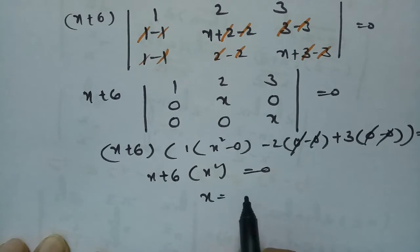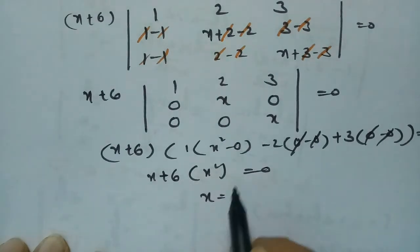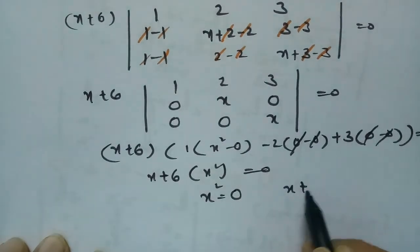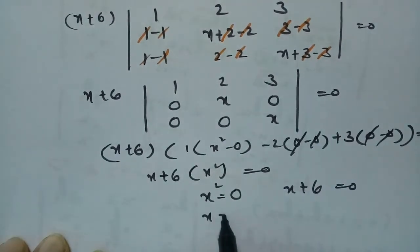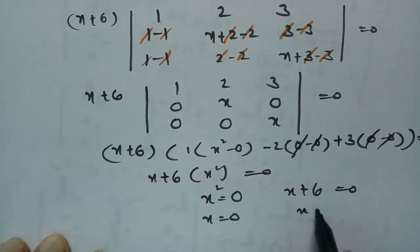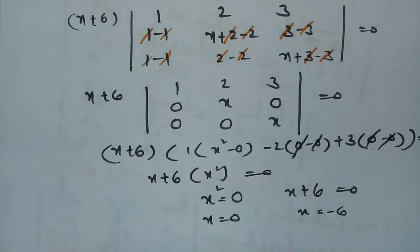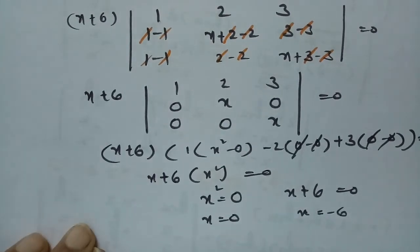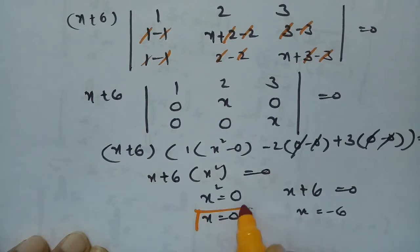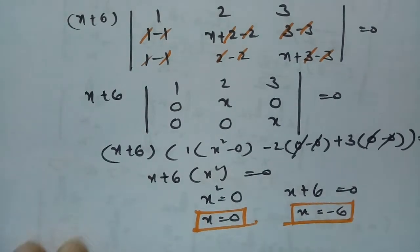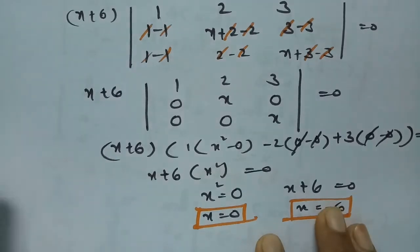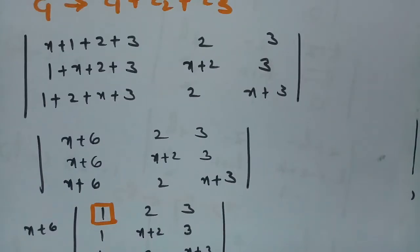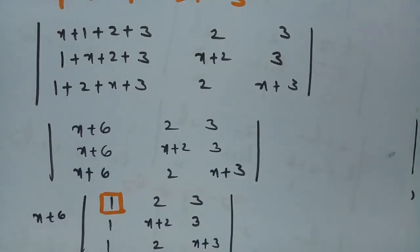After finding the determinant, the x values are 0 and −6. This is how we solve this question, and question 12 is completed.